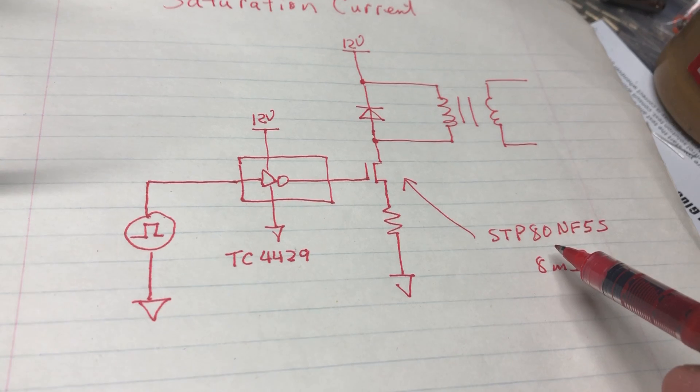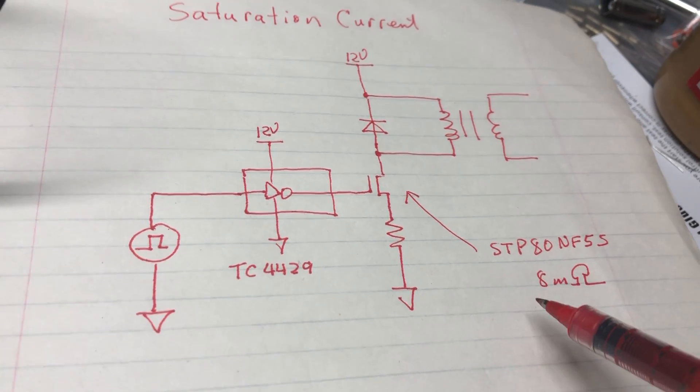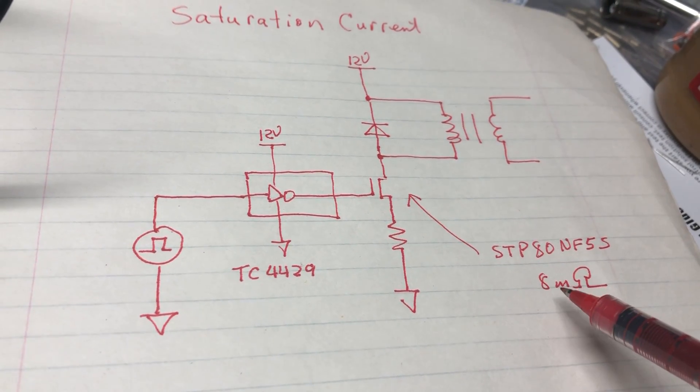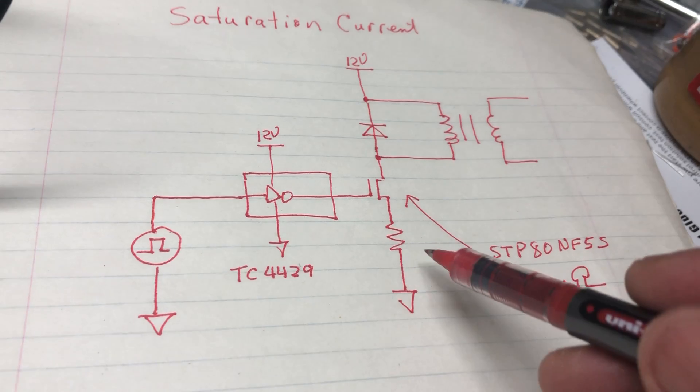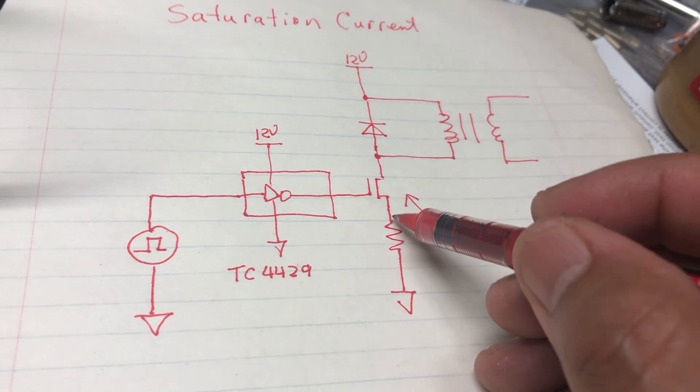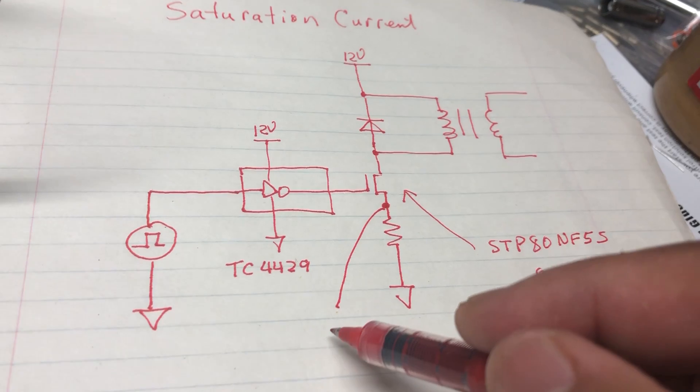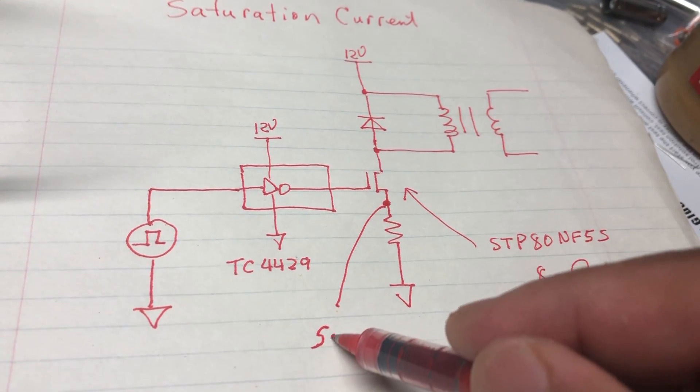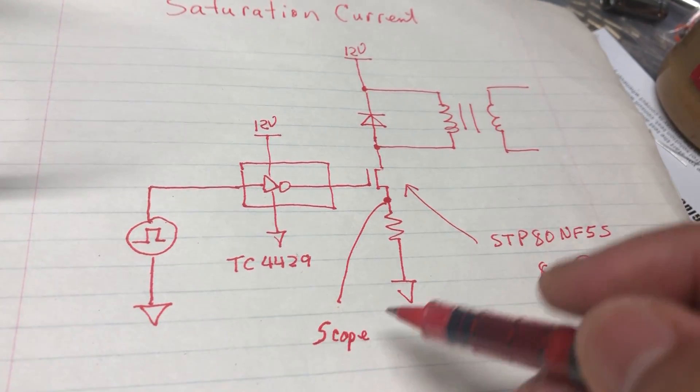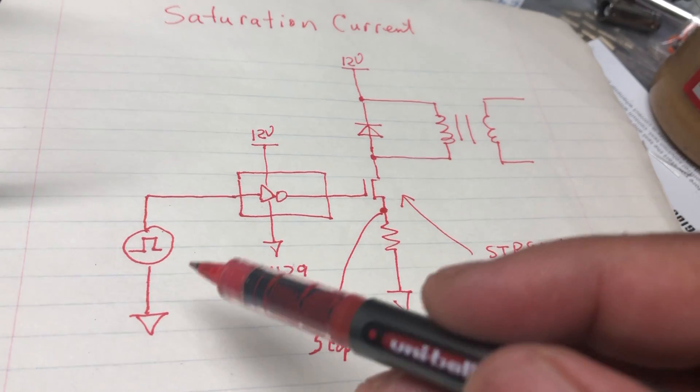The MOSFET is the STP80NF55, it's got an 8 milliohm RDS on. At this point is where we would put the scope to monitor the current.